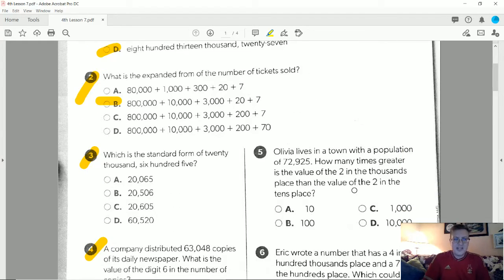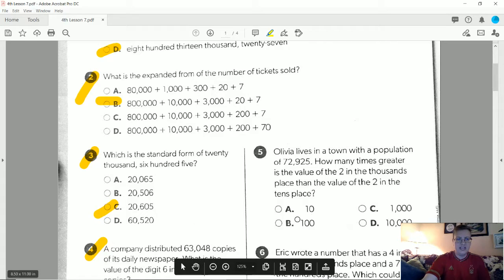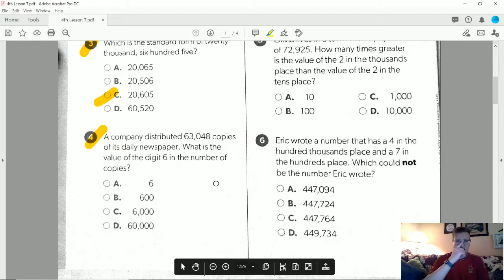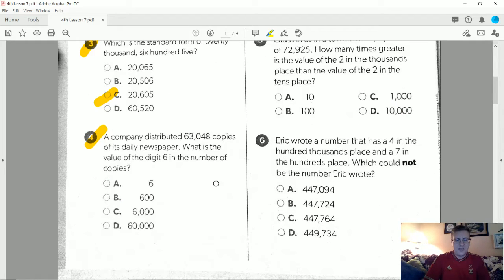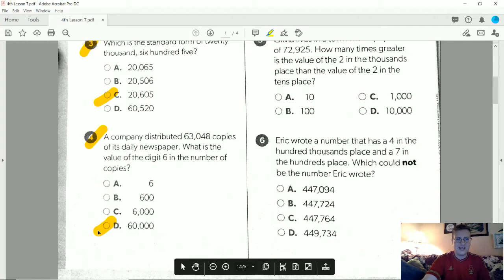Number three, what is the standard form of 20,605? That would be letter C. Number four, a company distributes 63,048 copies of a daily newspaper. What is the value of the six? That would be worth 10,000, it's in the 10,000 place, so it would be worth 60,000.